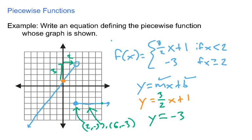So an equation that defines this piecewise function could look exactly like this: f(x) equals three halves x plus one if x is less than 2, and negative 3 if x is greater than or equal to 2.